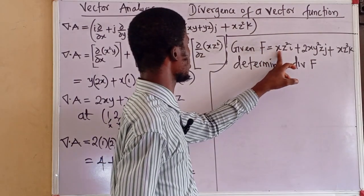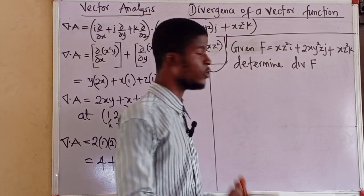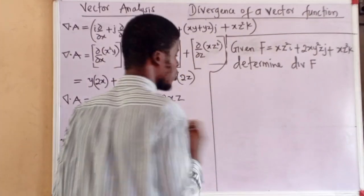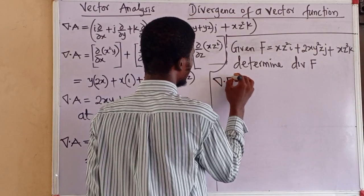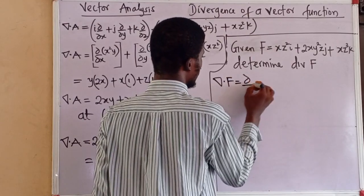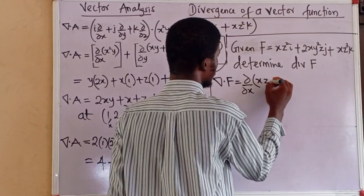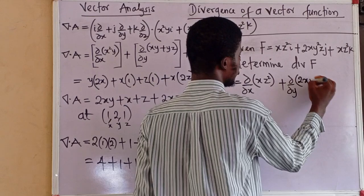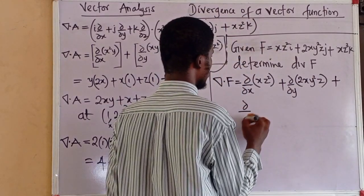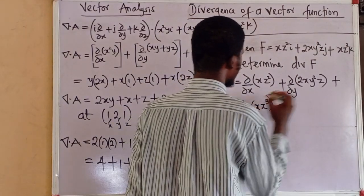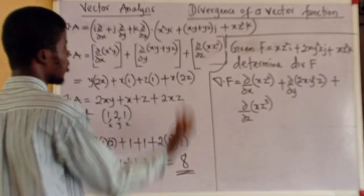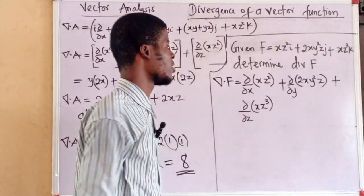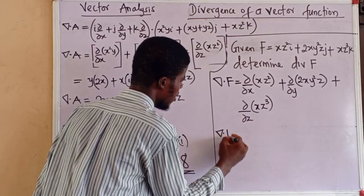Next, given F equal to xz²·i plus 2xy²z·j plus xz³·k, what is the divergence of vector F? Let's go straight to it. The divergence of F is: ∂/∂x of xz² plus ∂/∂y of 2xy²z plus ∂/∂z of xz³. I didn't bother going through the dot product process again since it leads to the same result.